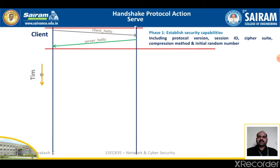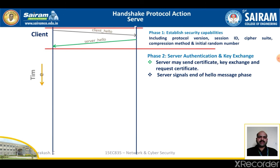In the second phase, server authentication and key exchange, the server begins by sending its certificate if it needs to be authenticated. The message contains one or more chains of X.509 certificates. The certificate message is required for any agreed key exchange method except anonymous Diffie-Hellman. If a fixed Diffie-Hellman is used, this certificate message functions as the server key exchange message because it contains the server's public key parameters.